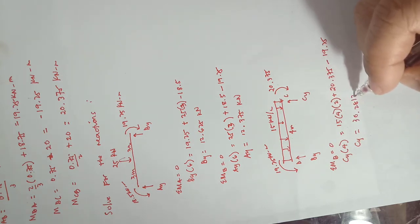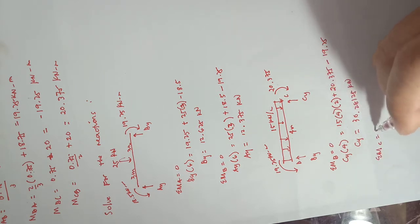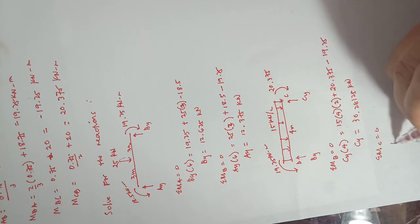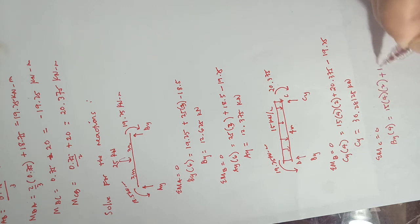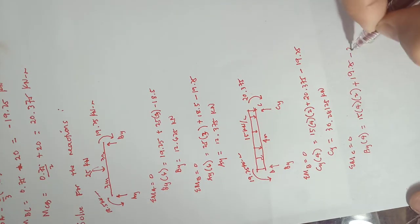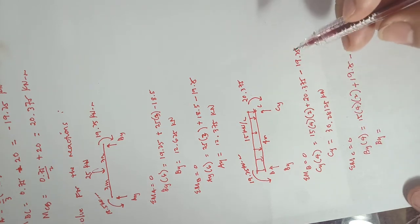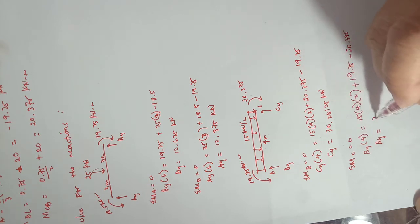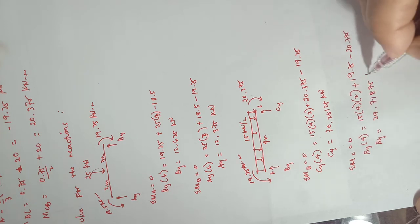Summing moments at C equal to zero to solve for B_y on span BC: B_y times 4 equals 15 times 4 times 2, plus 19.25 minus 20.375. Solving, B_y equals 29.71875 kilo-newtons.